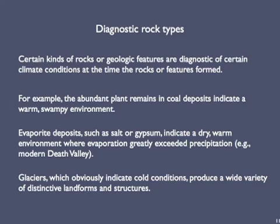A third example: a glacier, which is ice in motion, produces a wide variety of distinctive landforms and structures that are well known to geologists. So geologists, quite reasonably, infer that ancient glaciers produced landforms and structures similar to those produced by modern glaciers, and they use these to map the extent of these cold climate indicators and infer where glaciers used to be.